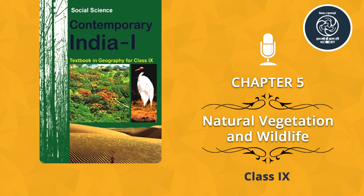Our country India is one of the 12 mega biodiversity countries of the world. With about 47,000 plant species, India occupies 10th place in the world and 4th in Asia in plant diversity. There are about 15,000 flowering plants in India, which account for 6% of the world's total number of flowering plants. The country has many non-flowering plants such as ferns, algae and fungi. India also has approximately 90,000 species of animals as well as a rich variety of fish in its fresh and marine waters.